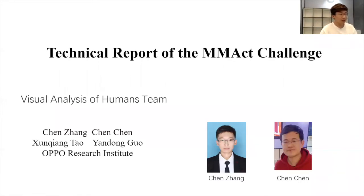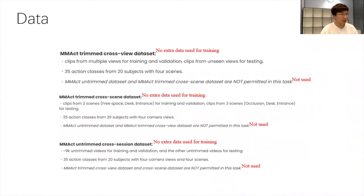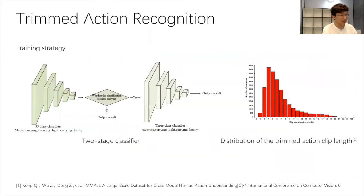Hello everyone, we are the Visual Analysis of Humans team from OPPO Research Institute. Our members include Chen Chen, Xin Xiangtao, Yandong Guo, and Chen Zhang. For both tasks, we only use RGB video from the MMACT multi-modality dataset as input to our CNN. We neither use external data in any task nor mix data from different tasks. For the trimmed action recognition task, we merge 'Carry,' 'Carry Light,' and 'Carry Heavy' into one category called 'Carry,' reducing the 35 classification categories to 33.